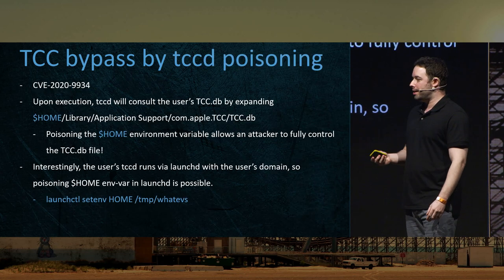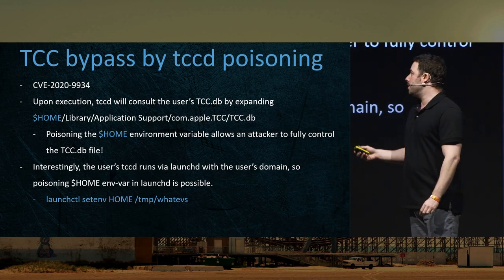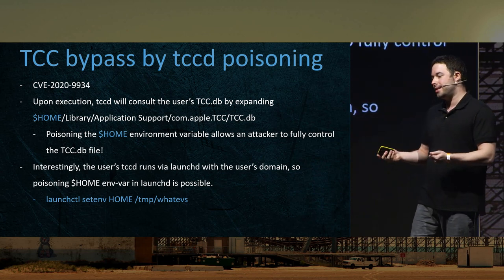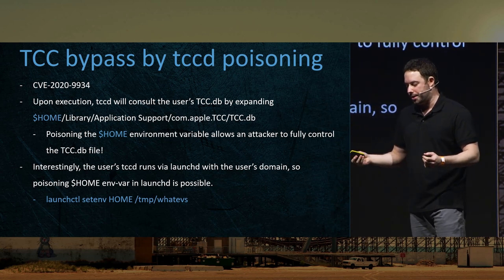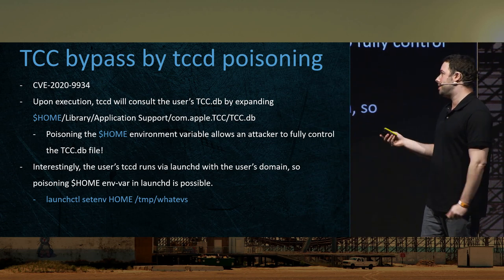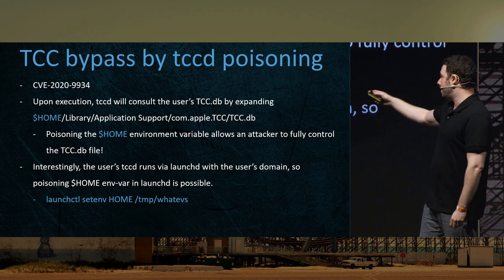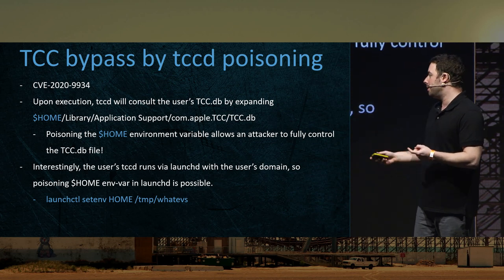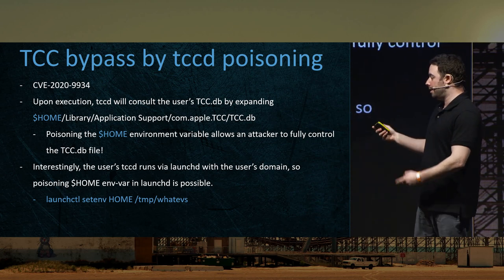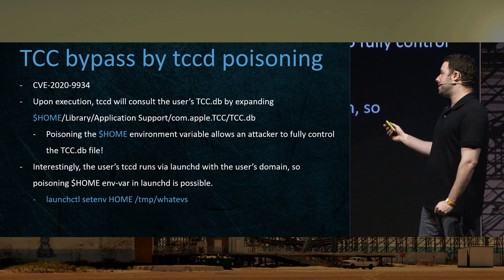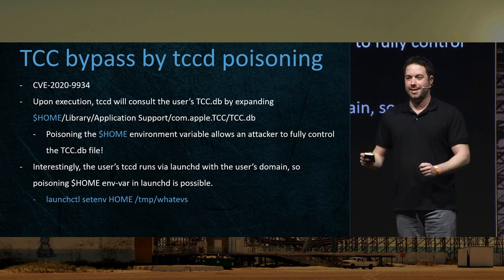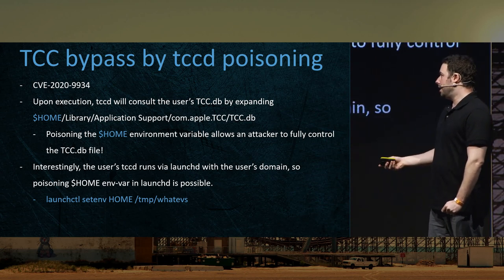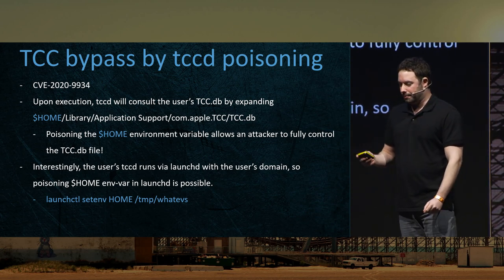Another 2020 bypass — this one wins by knockout. When the user TCCD starts, it needs to access the TCC database in the home directory. To find the home directory, TCCD expanded the HOME environment variable. So if you poison HOME and restart TCCD, you're able to plant your own malicious TCC.db file — for example, setting home to the temp directory. That was the exploit: really easy to do and a really awesome technique.